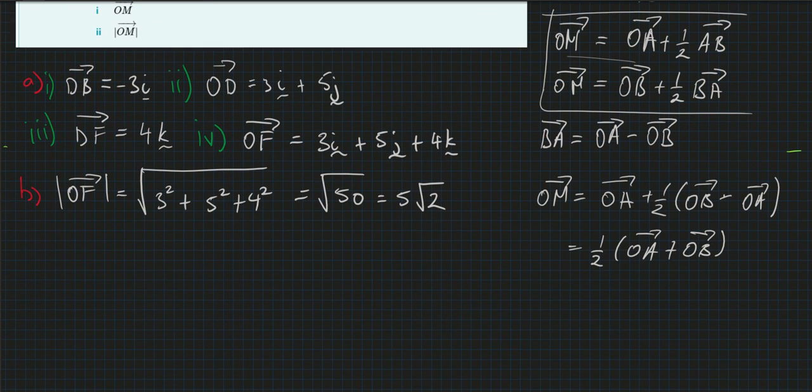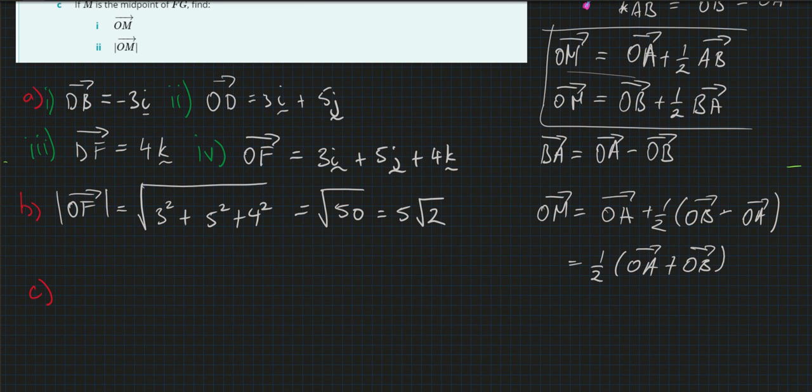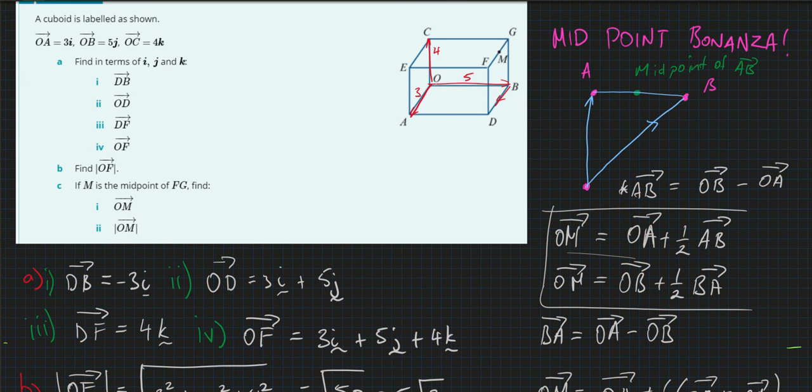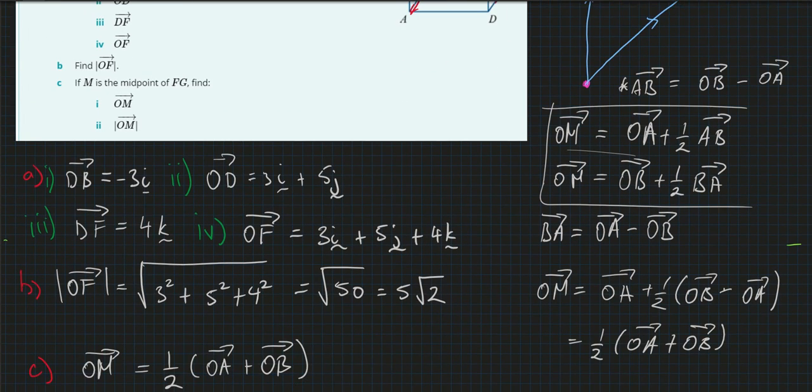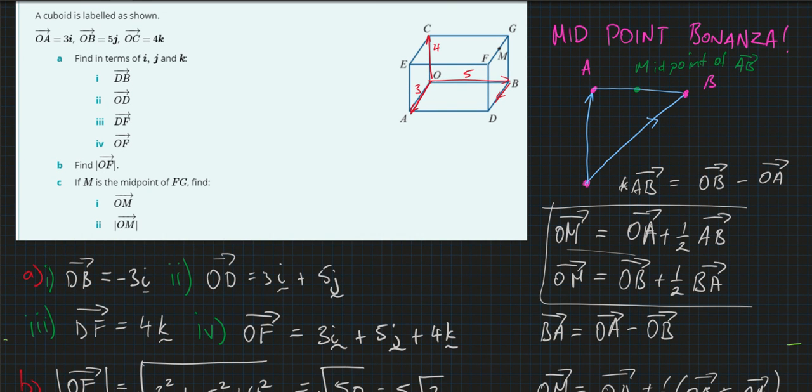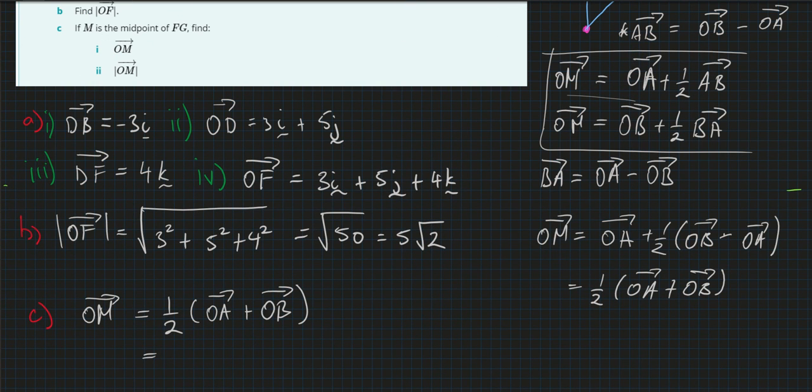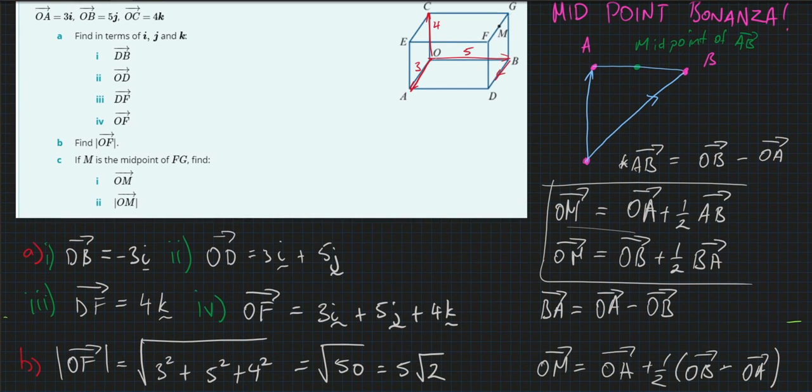So let's have a look at question C, part C here, and that is asking us what is O to M. So it's always going to be, the midpoint of A and B is always going to equal a half of O to A plus O to B. So we're looking at this midpoint M here, that's the midpoint of G to F. Do we have an O to G already? No, we don't.